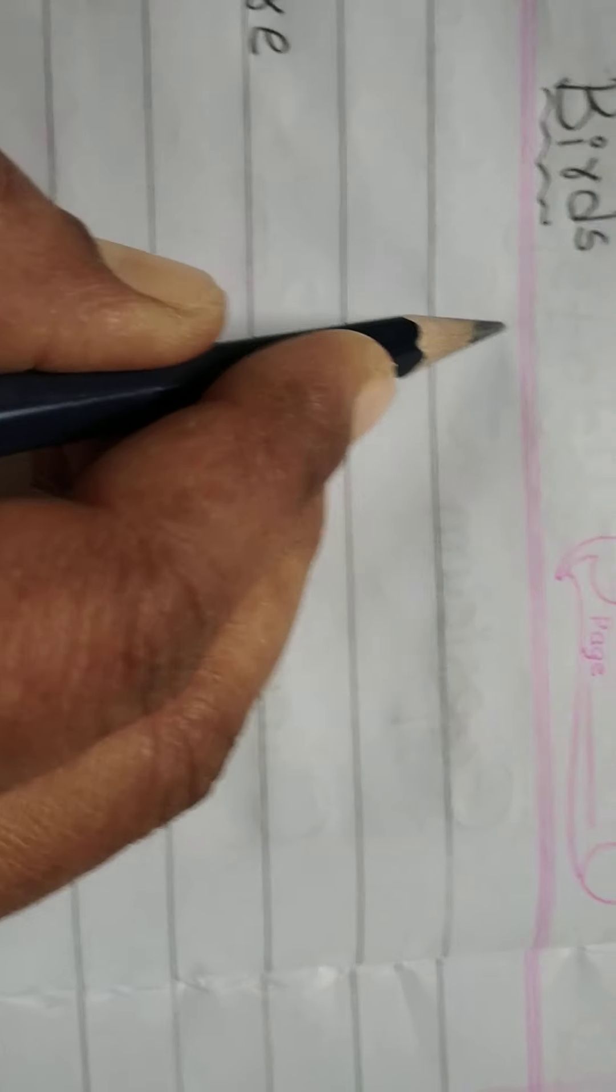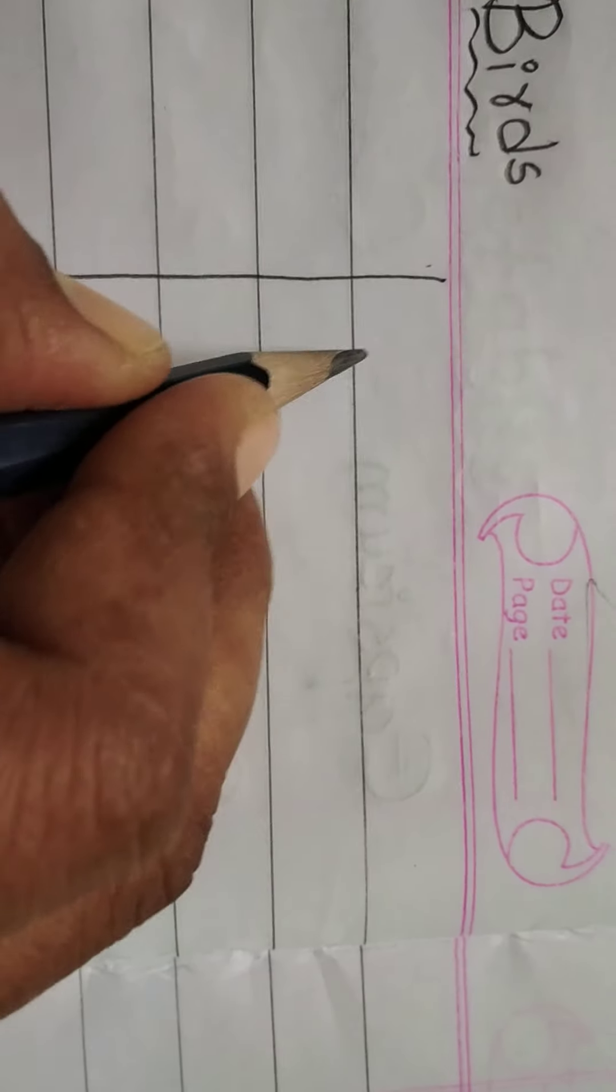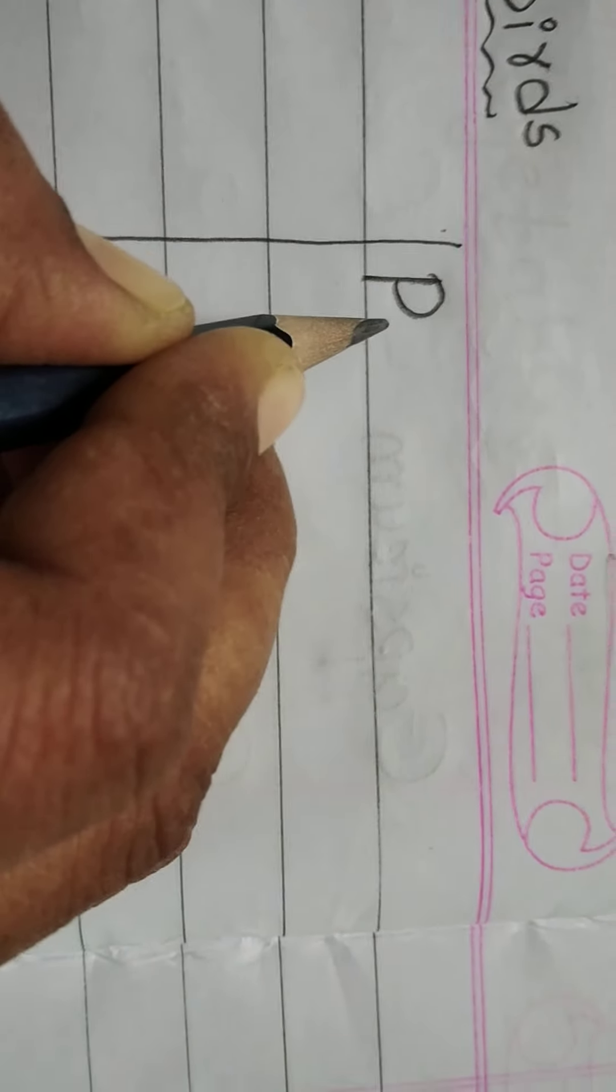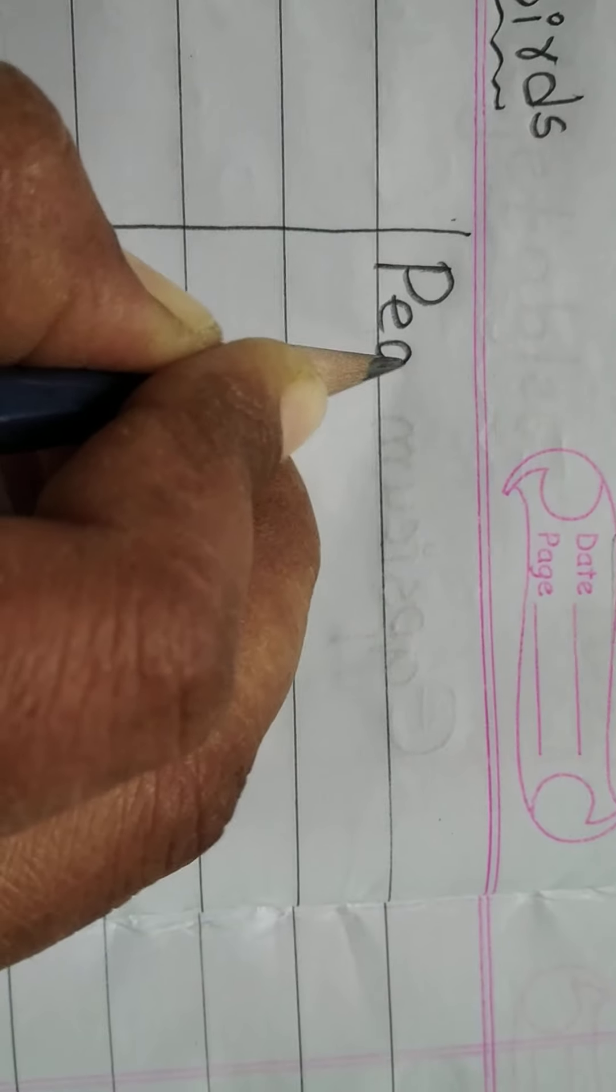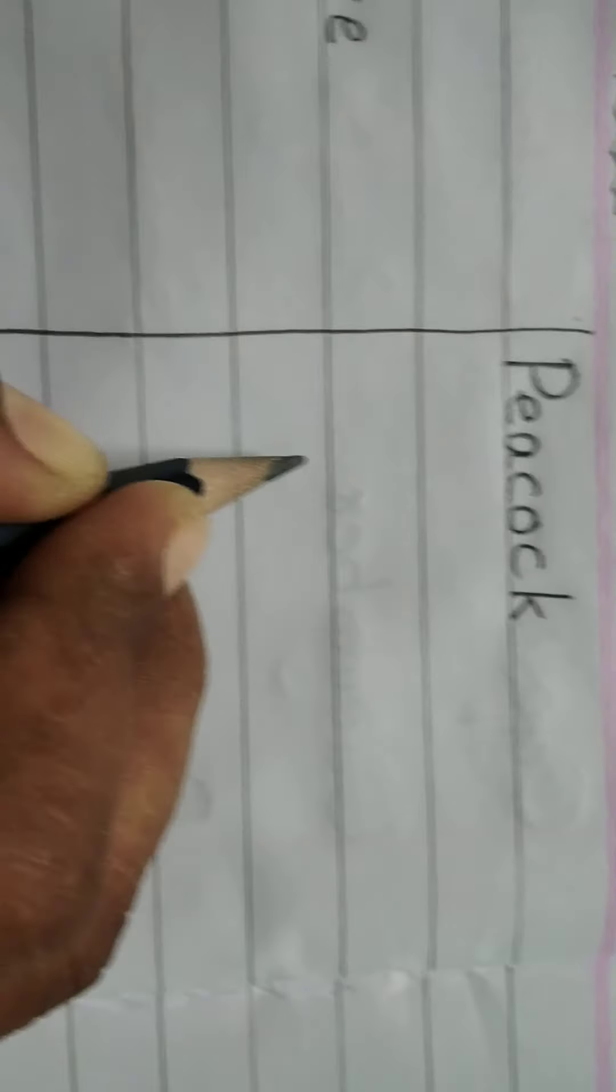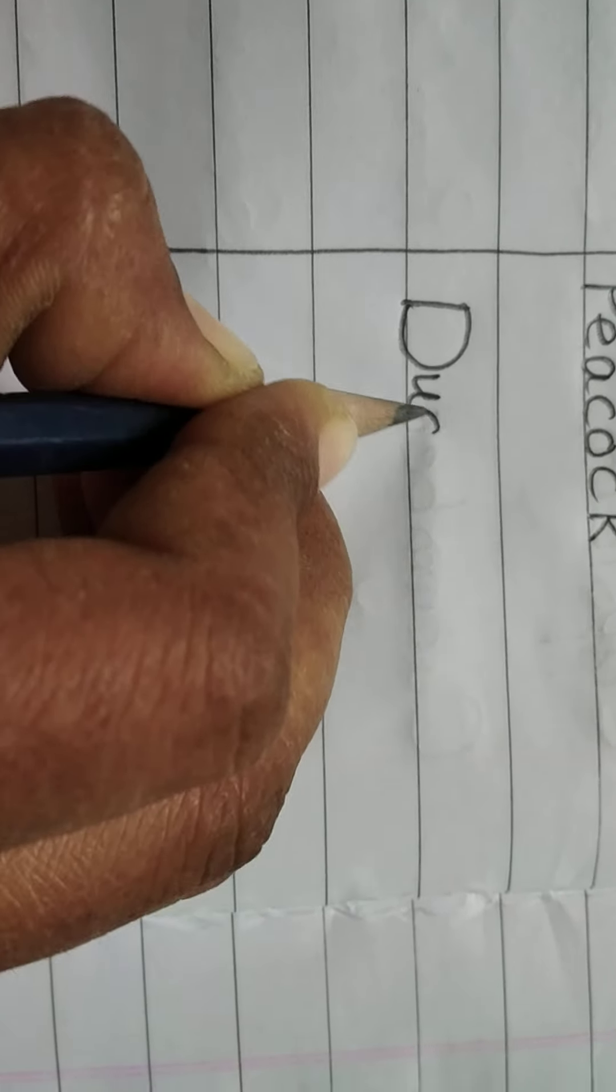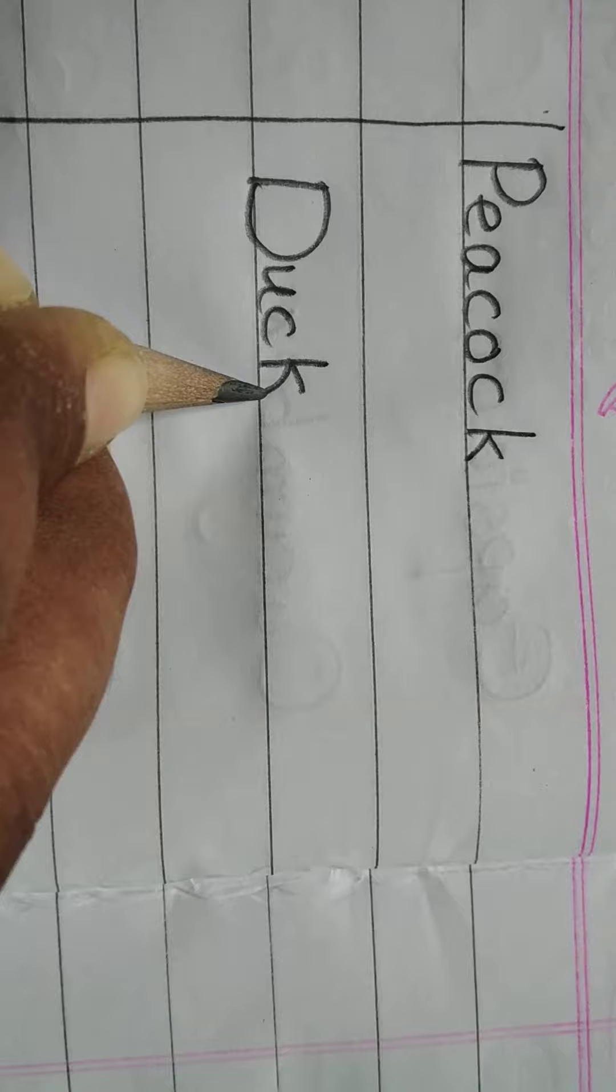Now write here. Draw a line. And write here children. Peacock. P-E-A-C-O-C-K. Peacock. D-U-C-K. Duck.